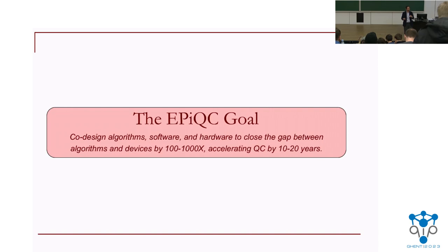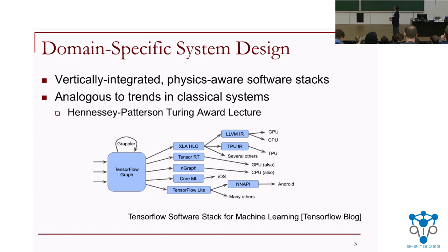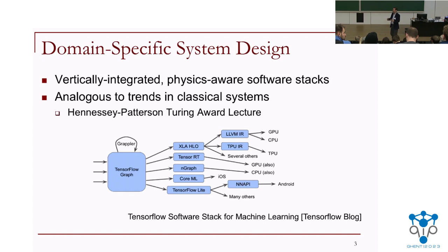What I'm going to do today is show you some examples of how we broke those abstractions and how that made things much more efficient. The significance of getting two to three orders of magnitude from a software and algorithms perspective is that historically it would take devices 10 to 20 years to improve that much. This approach is actually common in classical computing — companies that build hardware invest a lot in making software more efficient because it's a more cost-effective way to improve their machines.